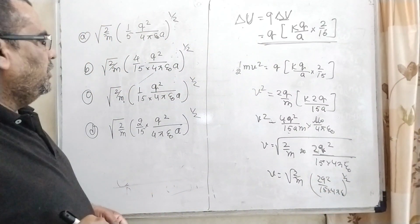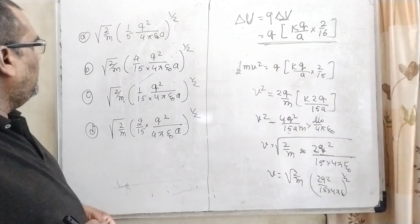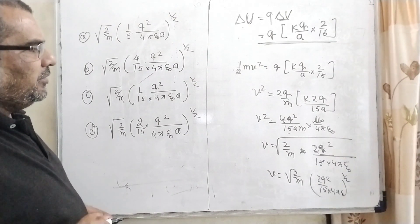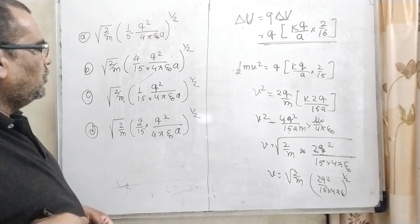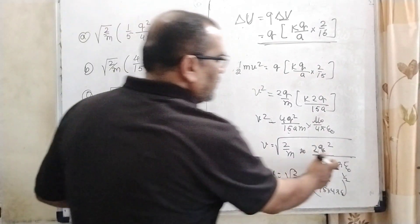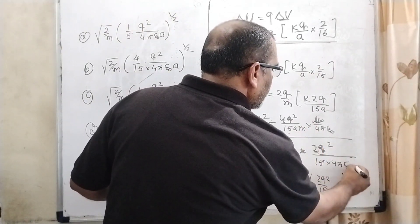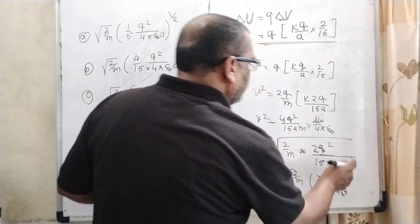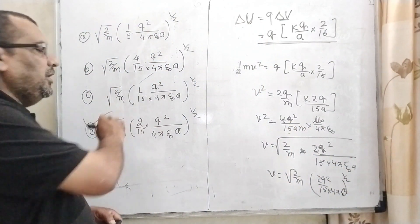Now let us check which option is correct. Root 2 by m and rest of the term 2q squared upon 15, 4 pi epsilon naught a raised to power half. Yes, sorry, A is also coming here. And power half. That is option D is correct.